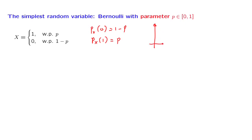If you wish to plot this particular PMF, the plot is rather simple. It consists of two bars, one at 0 and one at 1. This one has a height of p, and this has a height of 1 minus p. Bernoulli random variables show up whenever you are trying to model